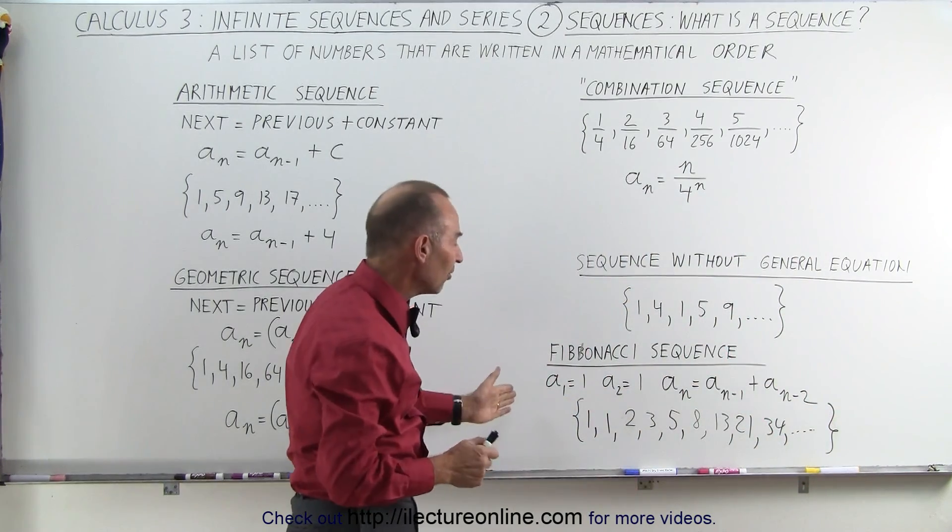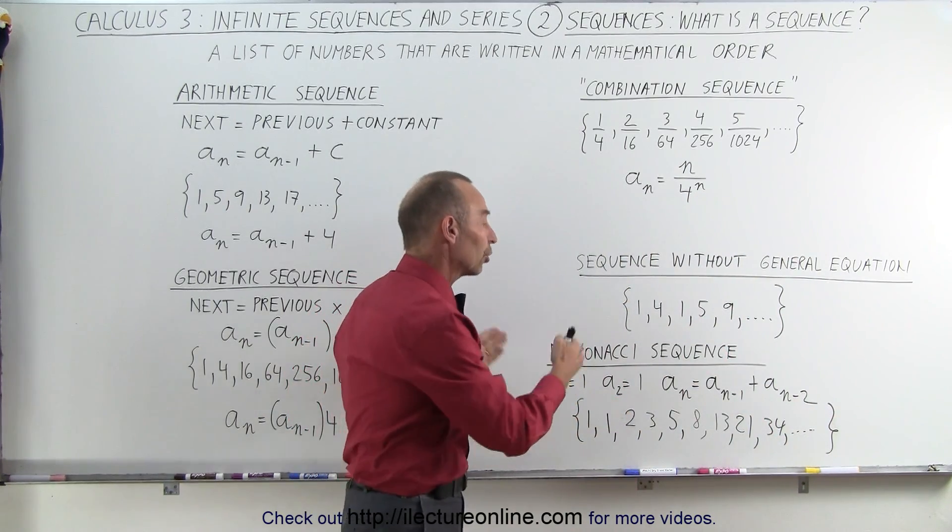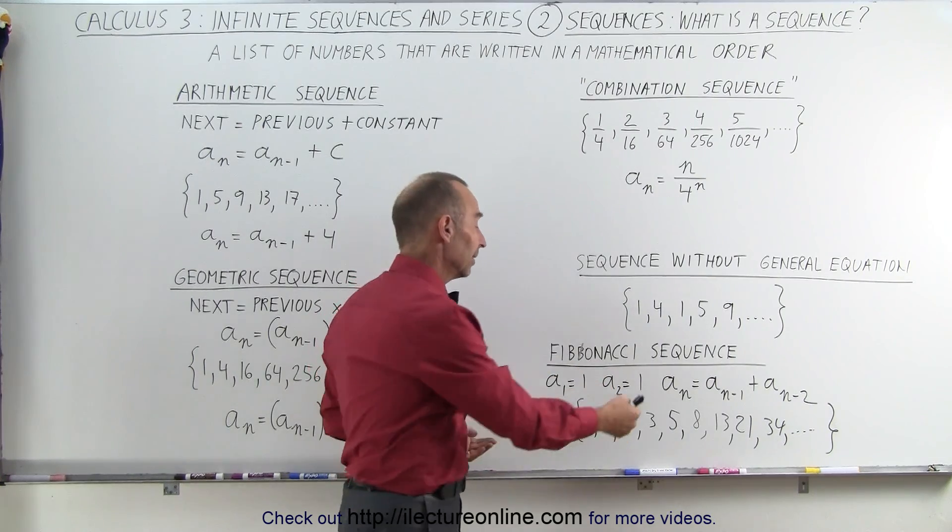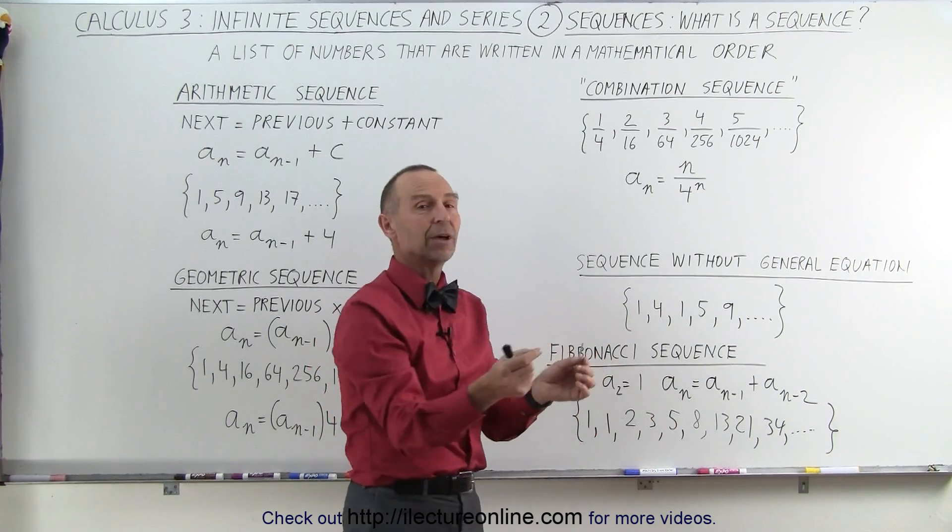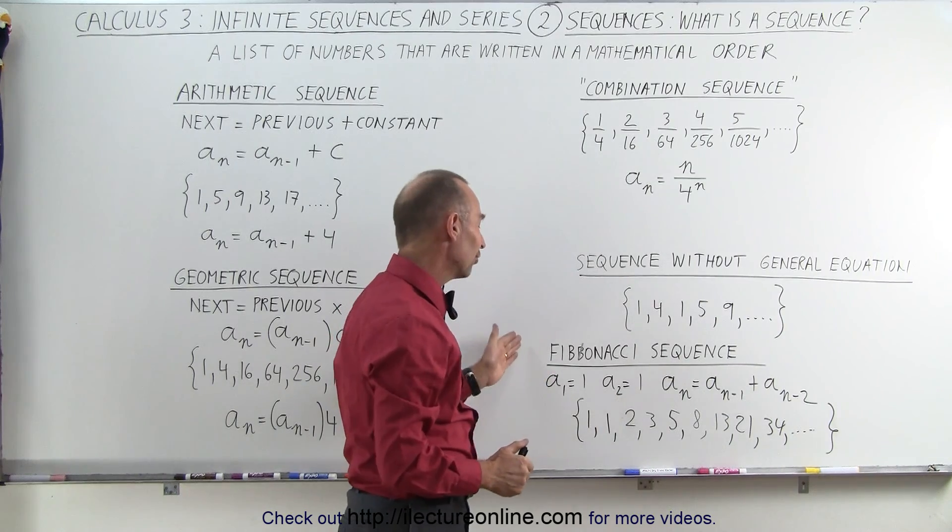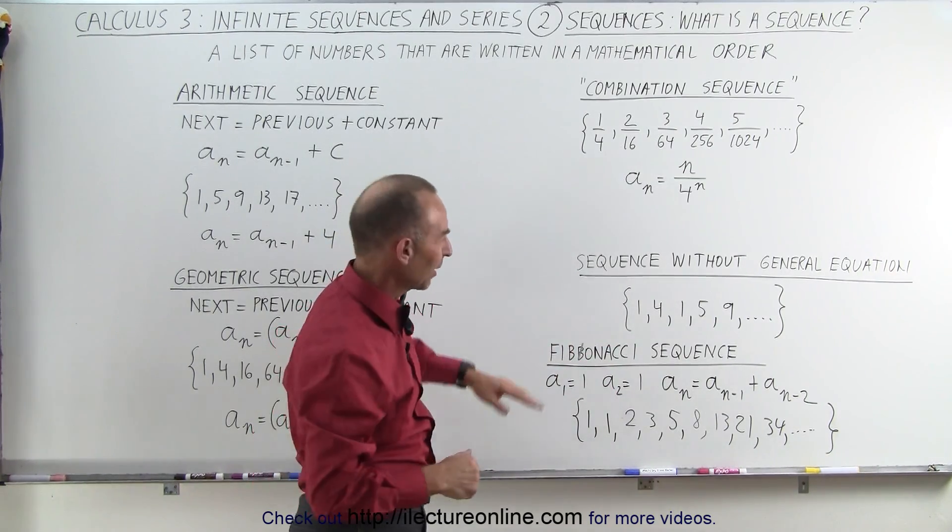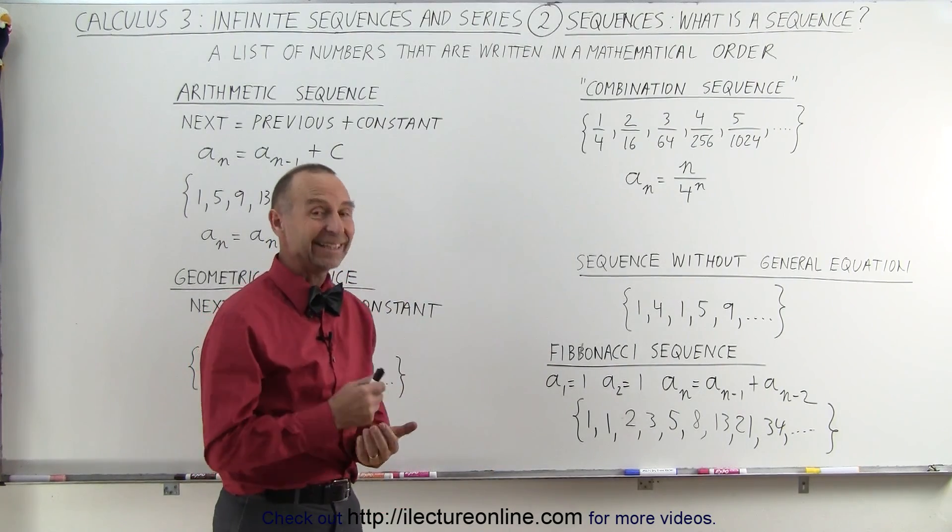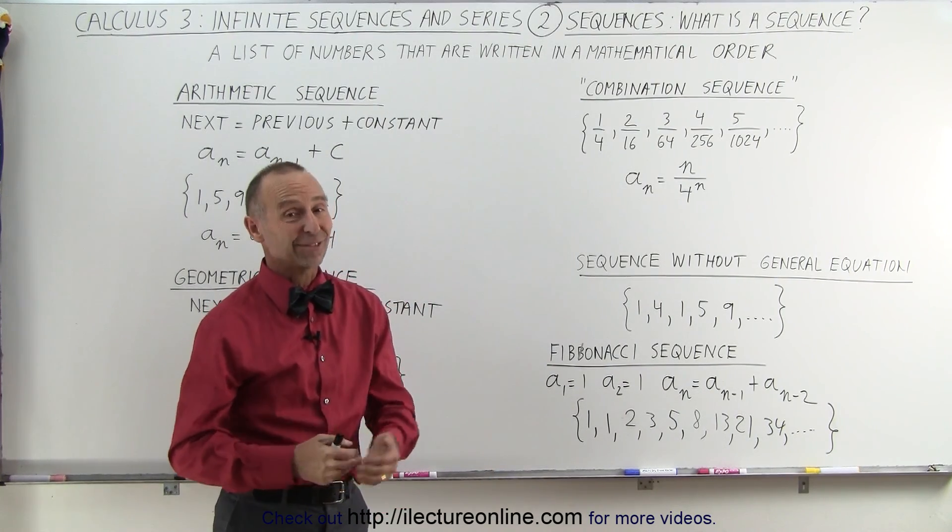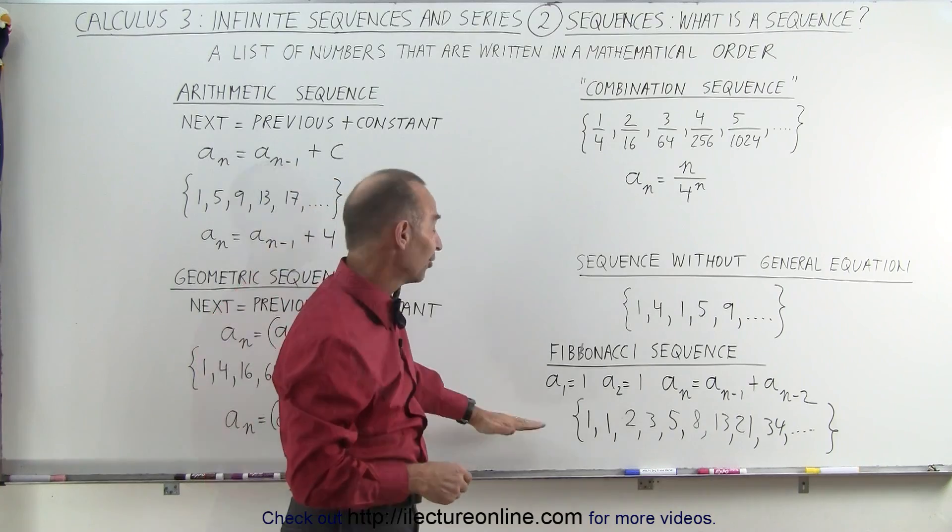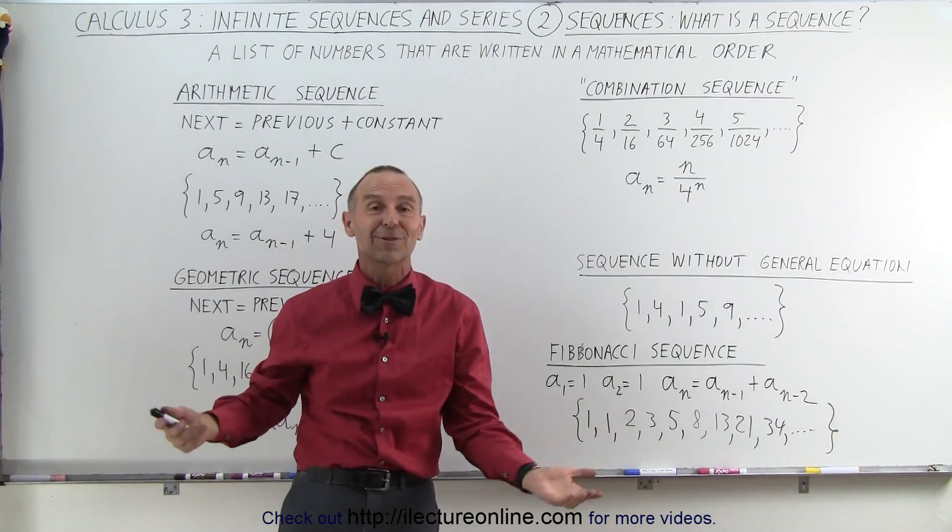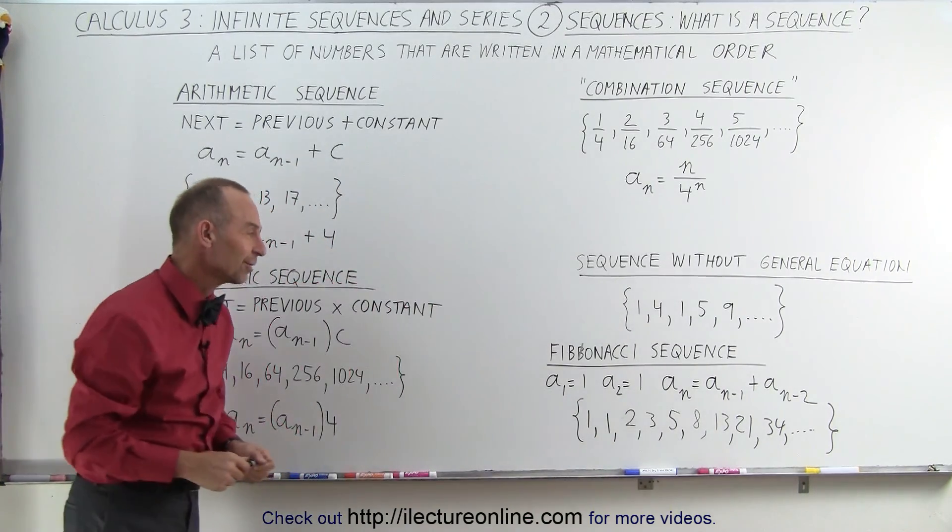You can see that this doesn't have a particular general equation other than that the next element is simply the sum of the two elements that came before it. And that is known as the Fibonacci sequence, which was set up many hundreds of years ago. I believe that he was born in 1175, which means that's the 12th century. So you can see that people have been looking at sequences of numbers already for a very long time.